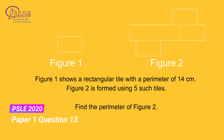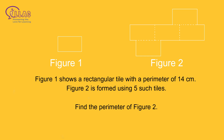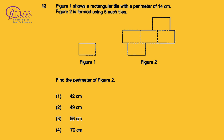Figure 1 shows a rectangular tile with a perimeter of 14 cm. Figure 2 is formed using 5 such tiles. Find the perimeter of Figure 2. In order to be able to finish the entire paper, leaving some time for checking, you should finish this question under 2 minutes. Pause the video and get doing!